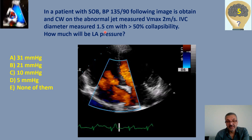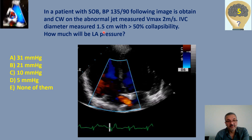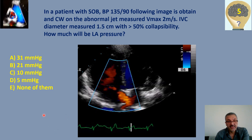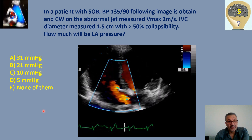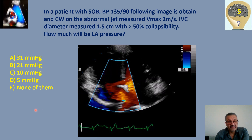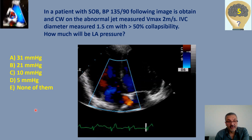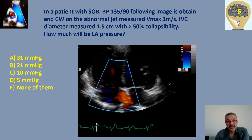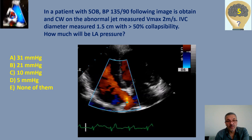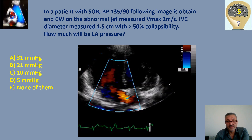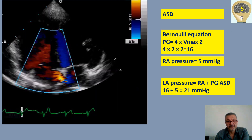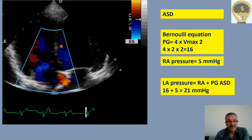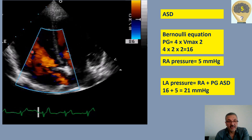Based on these findings, how much will the left atrial pressure be? Is it 31, 21, 10, 5, or none of them? Let's see the answer and how we can calculate it in this situation.